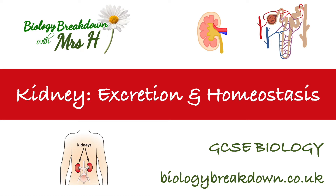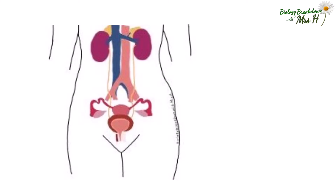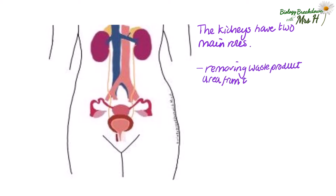Hello, Mrs H here. We are going to be looking at the kidneys' role in excretion and homeostasis at GCSE. We learn that the kidneys have two main roles. One is the removal of a waste product called urea from the blood. Urea is made by the liver when it converts excess amino acids into ammonia, which is then converted into urea.